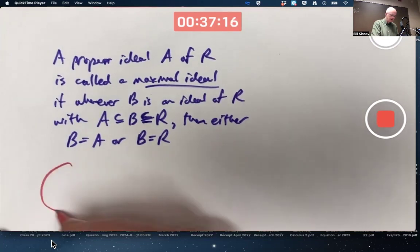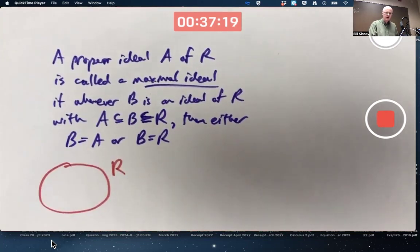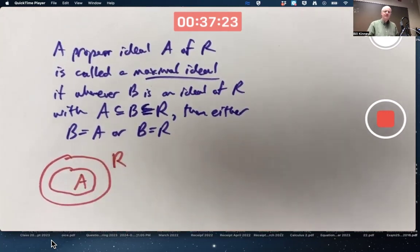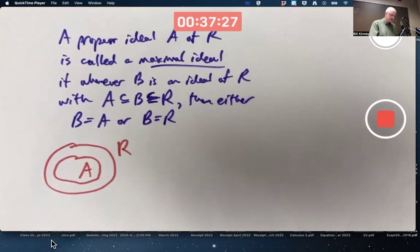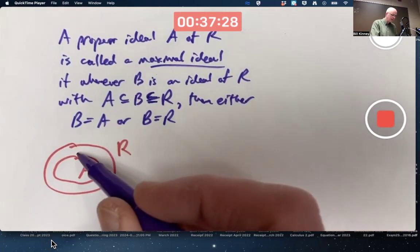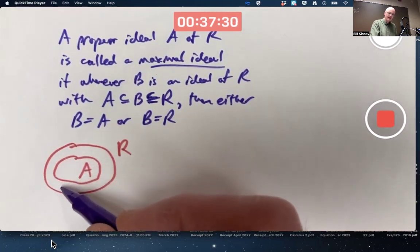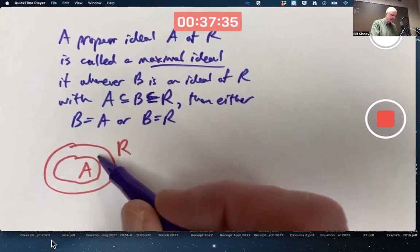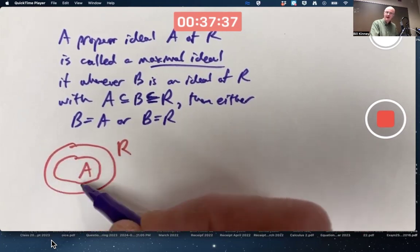In a picture, a Venn diagram type picture, if this is R and this is A, there's no ideal properly inside of R in which A is properly inside of that other ideal. There's no B in between, so to speak, A and R.